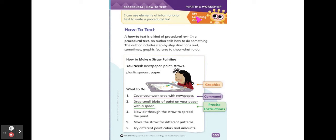At the top, let's go over our learning goal again: I can use elements of informational text to write a procedural text. What does that mean? We are writing a how-to text. A how-to text is a kind of procedural text. In a procedural text, an author tells how to do something. The author includes step-by-step directions and sometimes graphic features to show what to do.